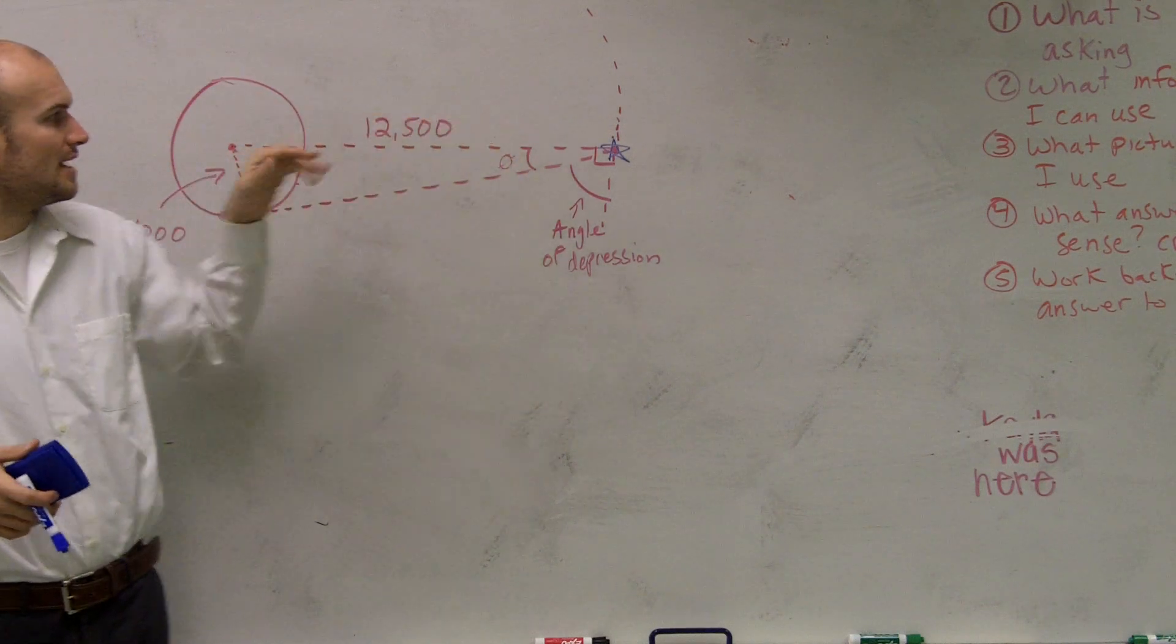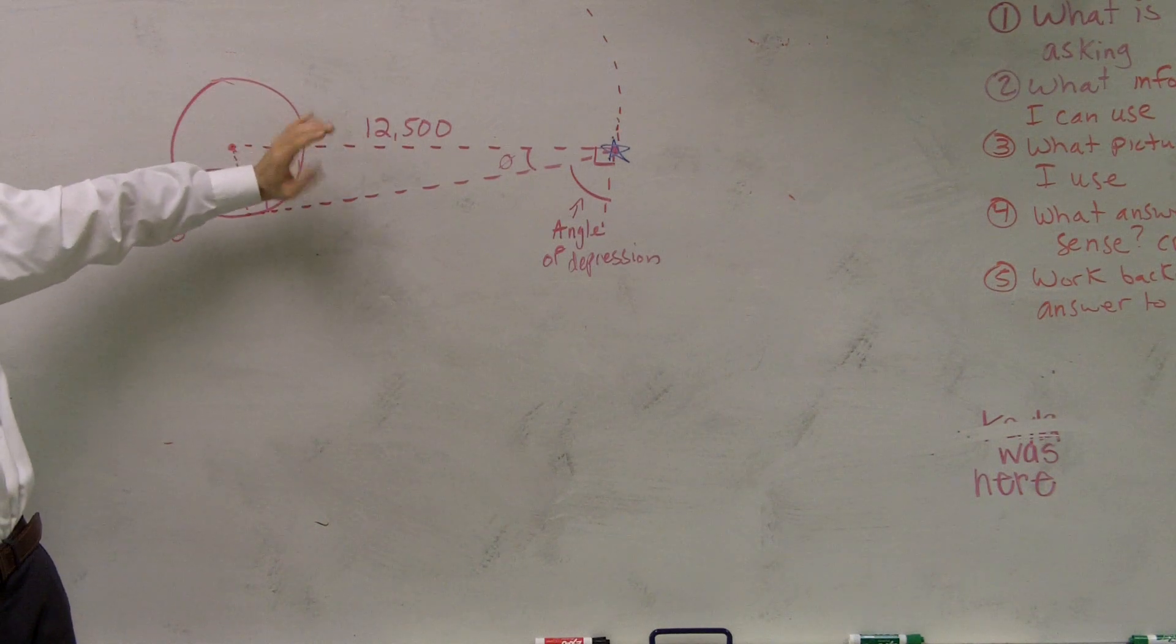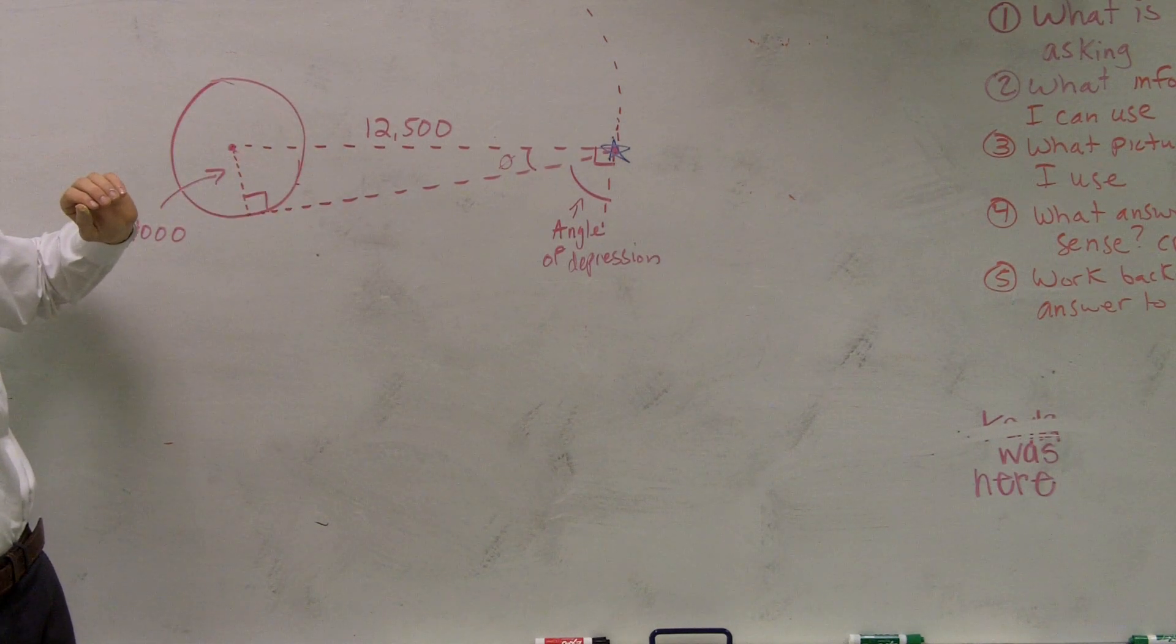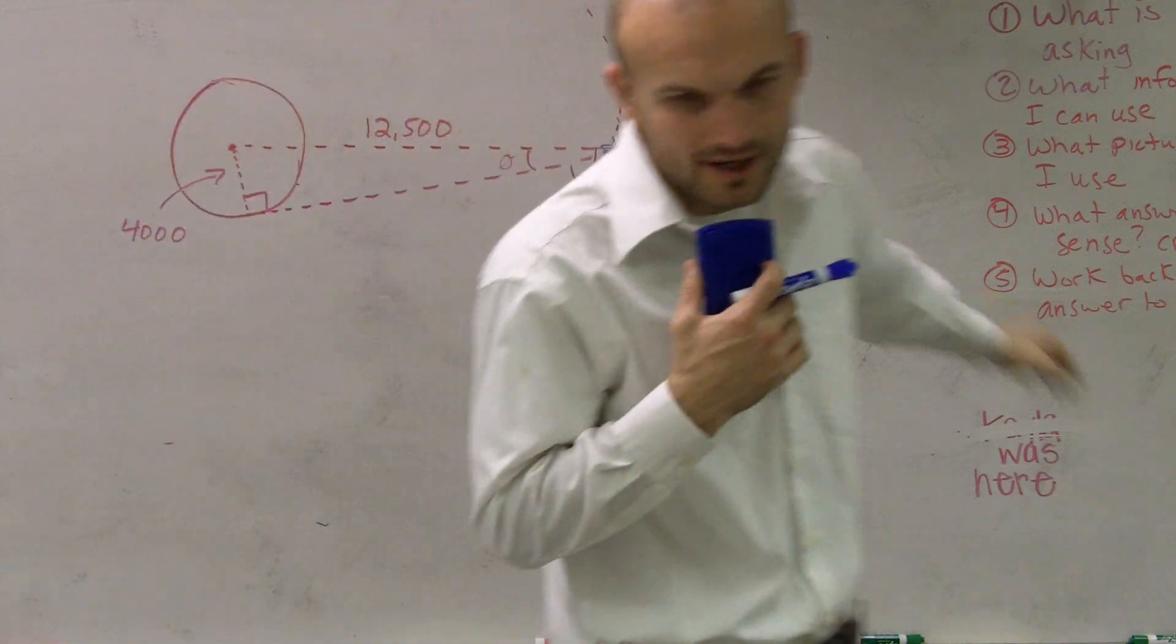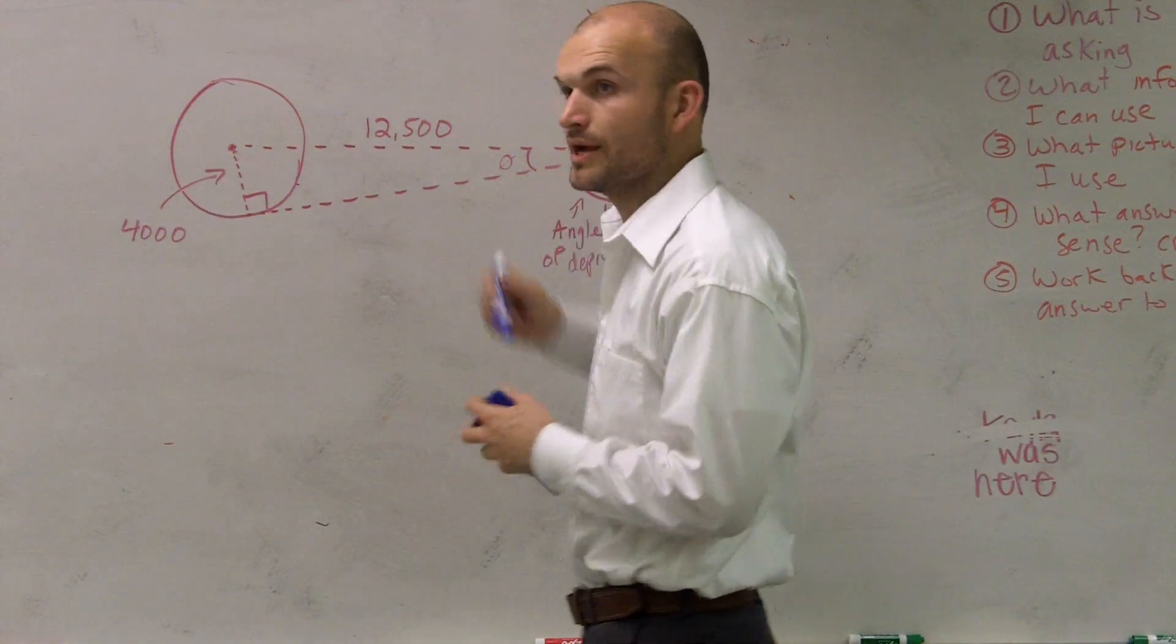And then what we have is this direct horizontal line that's saying that the satellite is how far away? It's 12,500 miles away.